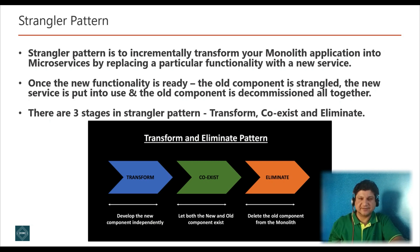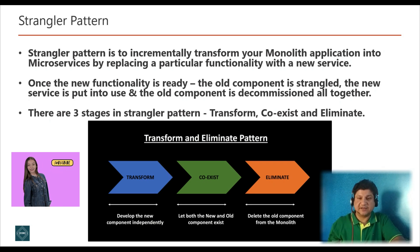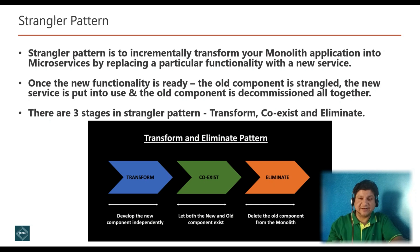The strangler design pattern is a fourth design pattern in the decomposition design pattern category. It is a popular pattern to incrementally transform your monolithic application into microservices by replacing a particular functionality with a new service. Once the new functionality is ready, the old component is strangled — the new service is put into use and the old component is decommissioned. Any new development is then done as part of the new services, not part of the old monolithic application.